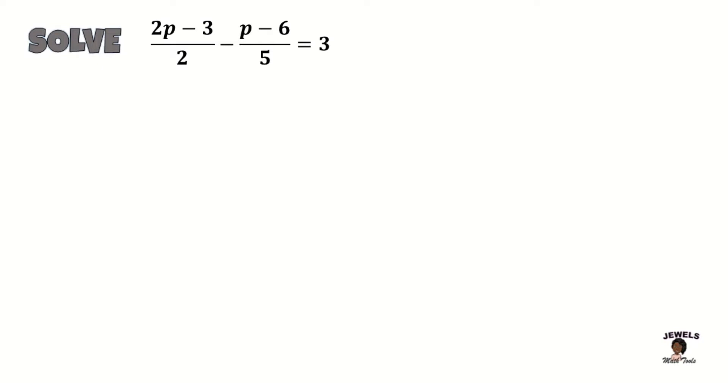Okay, so to begin solving our equation that we have here today. Remember that when you're working with fractions with unlike denominators, the first thing you always need to do is find your LCD. So let's find our LCD when we have 2 and 5, and we know that the LCD for 2 and 5 is going to be 10.